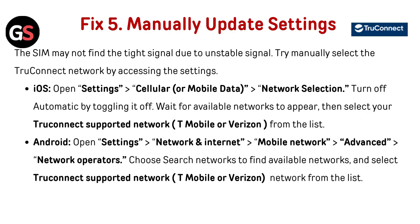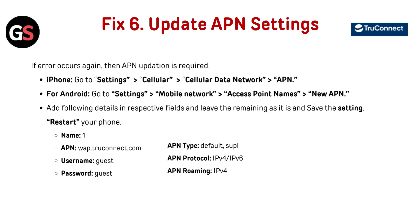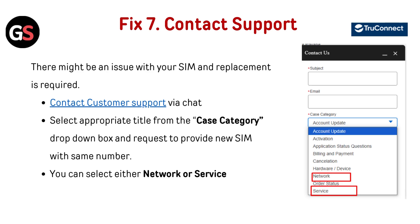Fix 6: Update APN settings. If the error occurs again, APN configuration is required. For iPhone: go to Settings, then Cellular, then Cellular Data Network, then tap APN. For Android: go to Settings, Mobile Network, Access Point Name, then tap New APN. Add the following details — Name: one; APN: vap.roconnect.com; Username: guest; Password: guest; APN Type: default or supl; APN Protocol: IPv4/IPv6; APN Roaming: IPv4. Leave remaining fields as is, save the settings, and restart your phone.